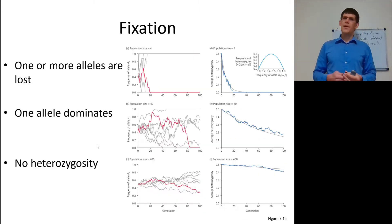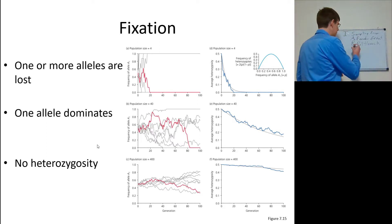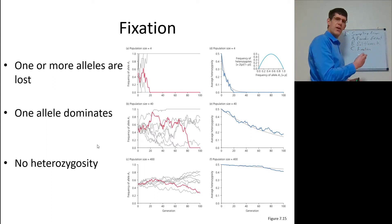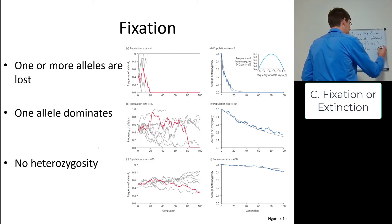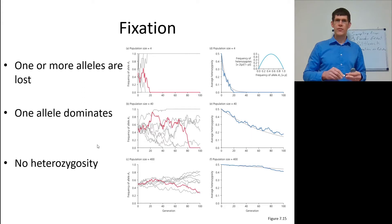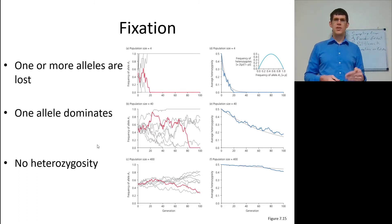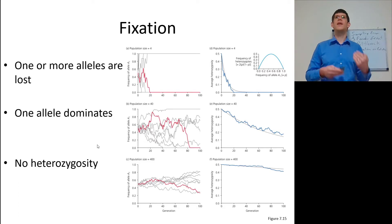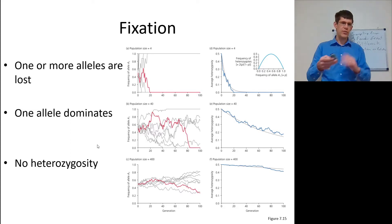When a population undergoes genetic drift, an allele can go two ways. It can go to fixation — when an allele represents 100% of the population — or to extinction, when an allele represents 0% of the population. By chance alone, sampling error may reduce an allele to 0%; that allele is extinct, and the other allele is now fixed. This reduces heterozygosity: as alleles get fixed, heterozygosity decreases — as a population is inbred, heterozygosity decreases.